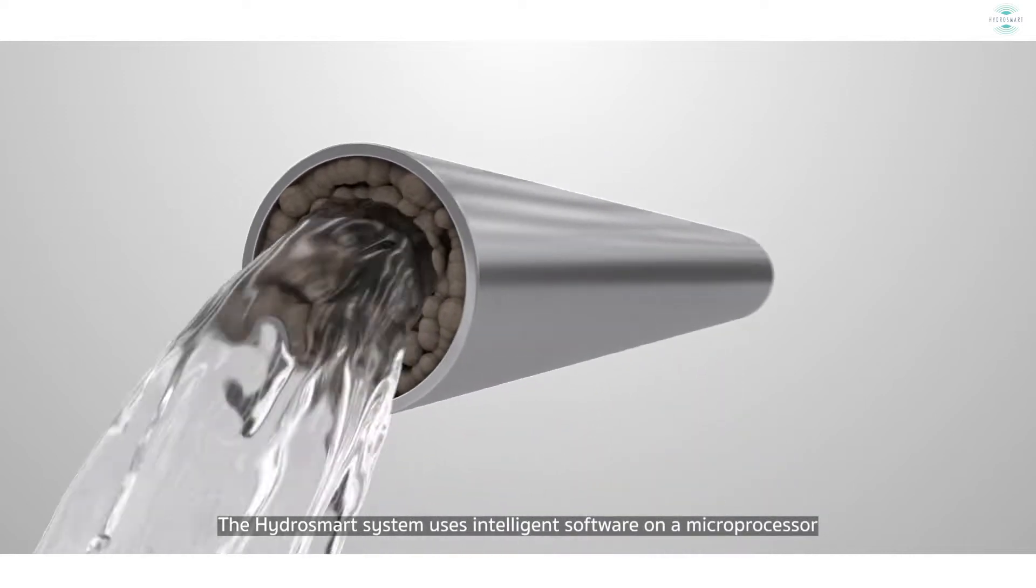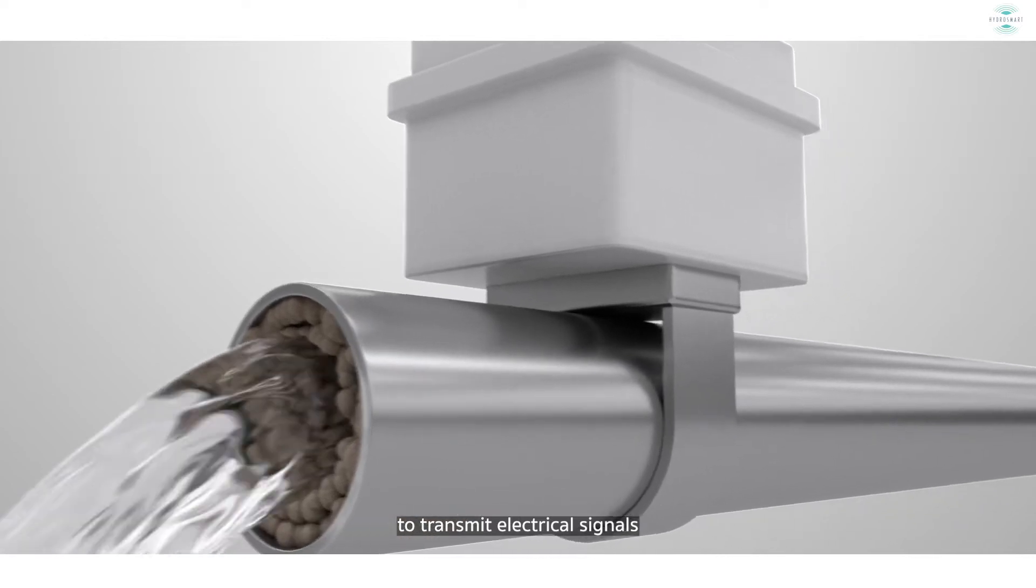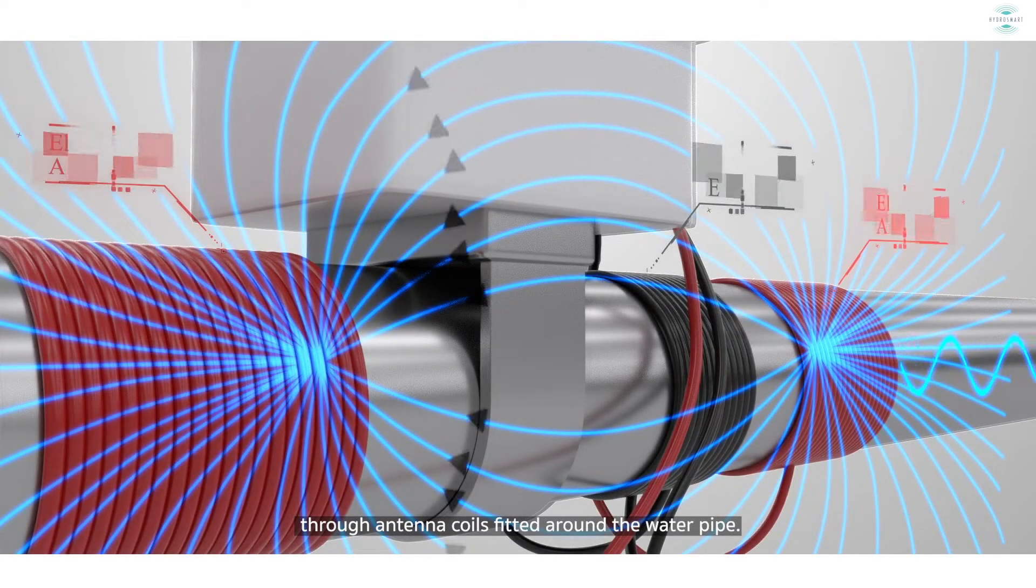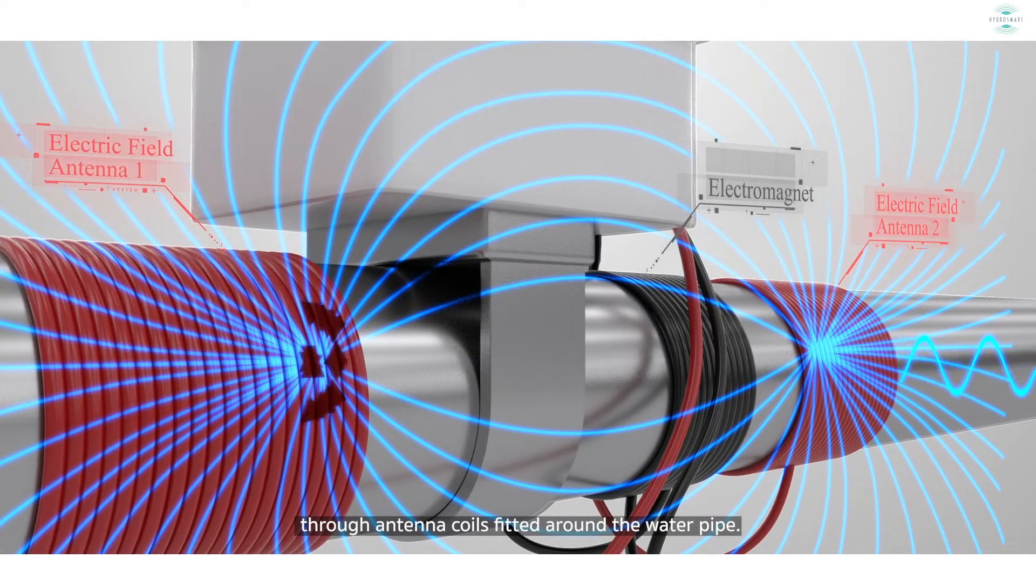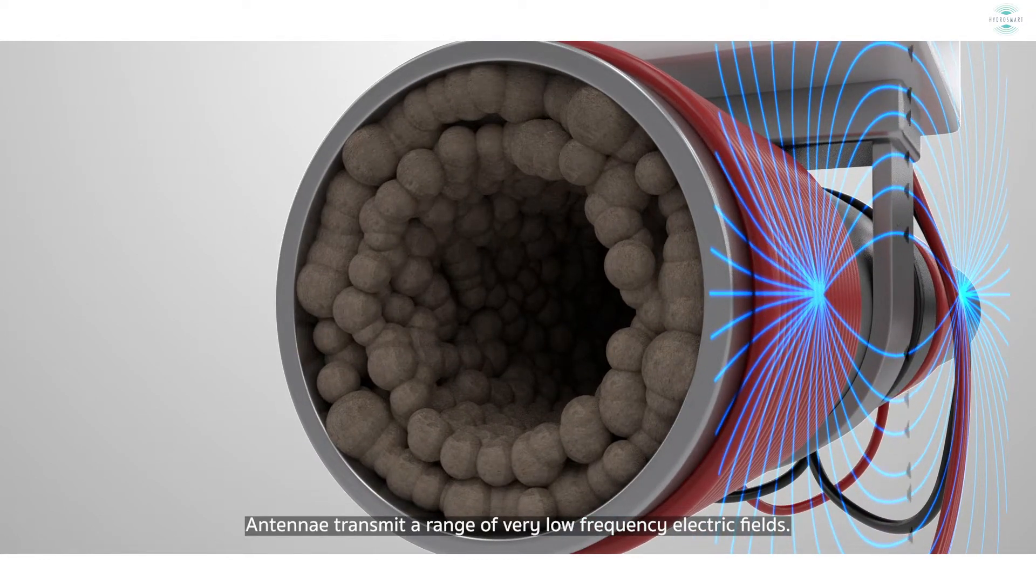The HydroSmart system uses intelligent software on a microprocessor to transmit electrical signals through antenna coils fitted around the water pipe. The antennae transmit a range of very low frequency electric fields.